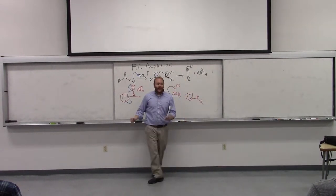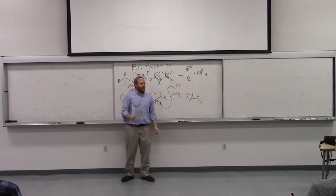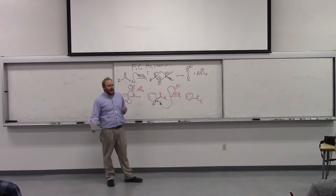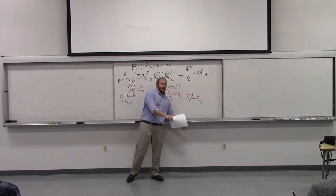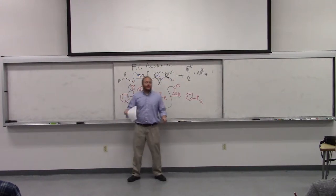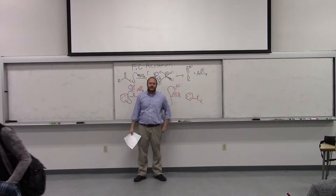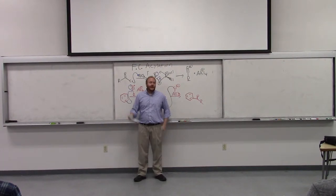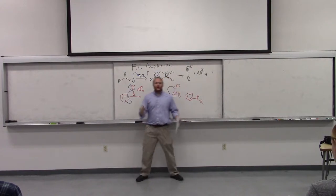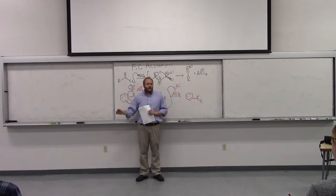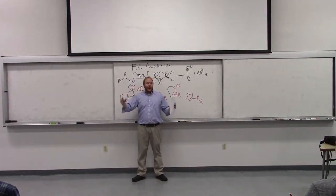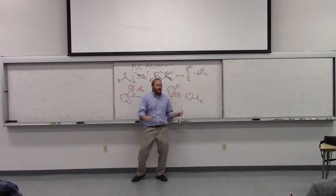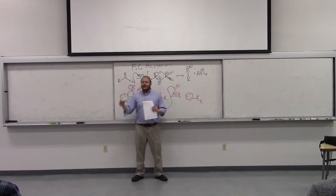On Monday, at the very end of lecture, we talked about Friedel-Crafts acylation. First we talked about Friedel-Crafts alkylation. What was the biggest drawback about the alkylation? Carbocation rearrangements. When Friedel-Crafts alkylation goes through carbocations, things with a lot of cationic character, if you have a cation that can rearrange to give a more stable cation, it absolutely will.